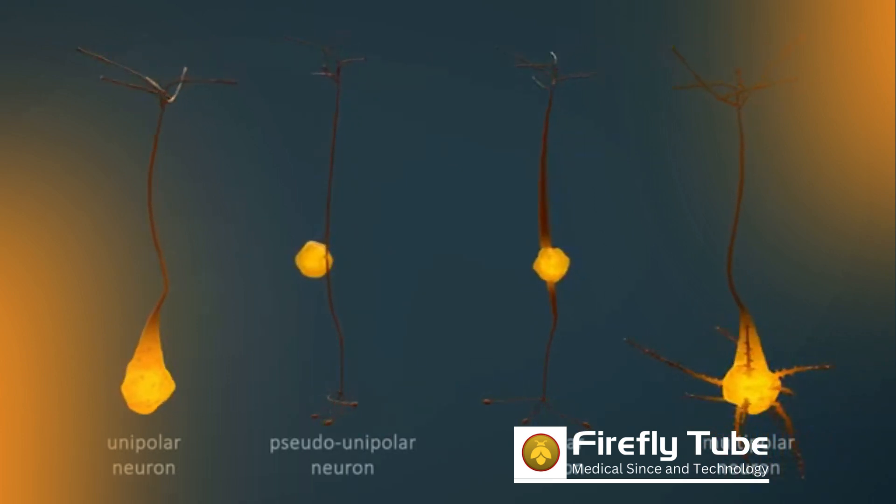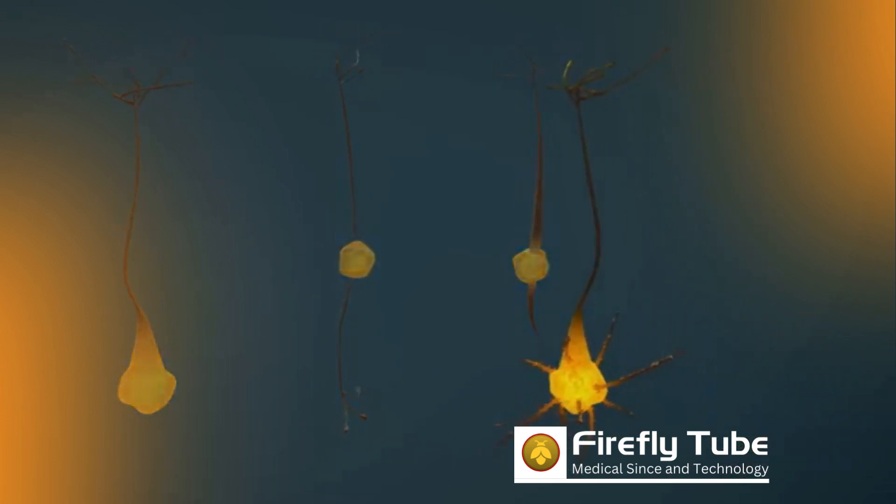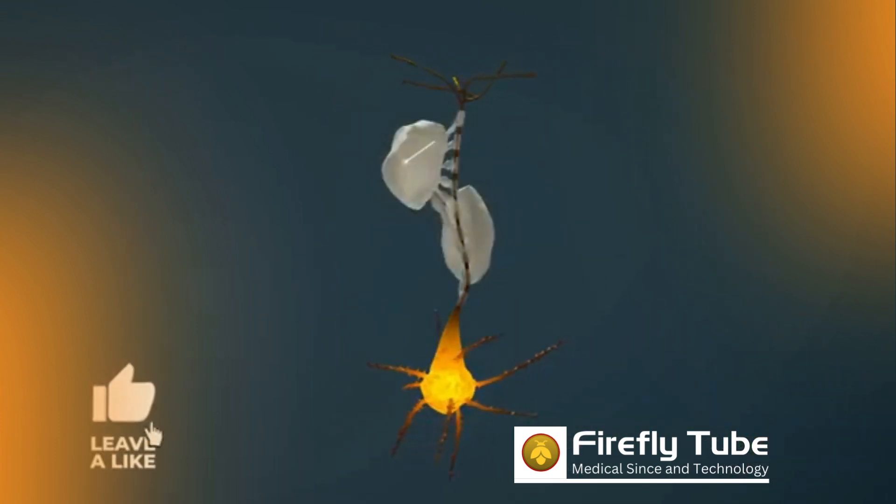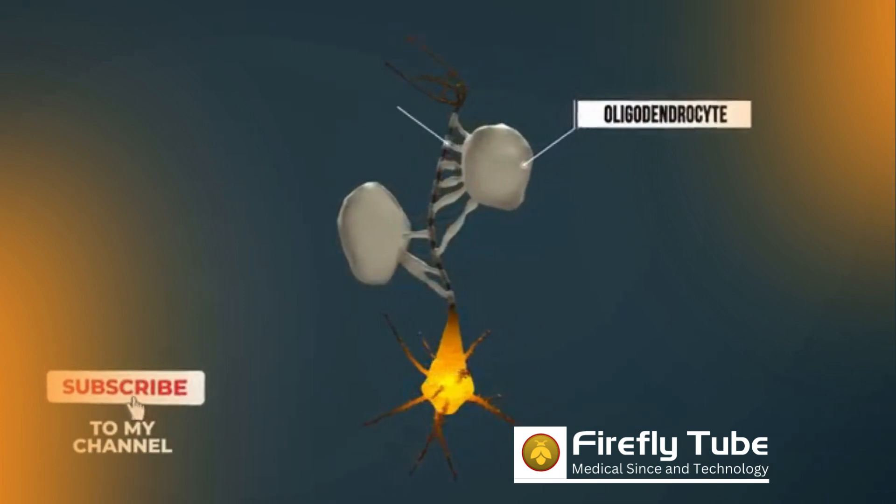In addition, many axons in the human body are surrounded by myelin, which is formed within the brain by oligodendrocytes. This allows an impulse to be transmitted even faster.